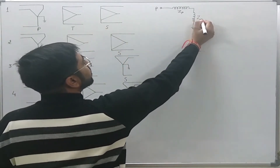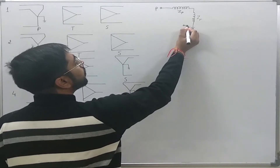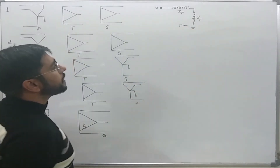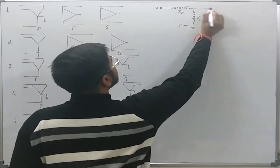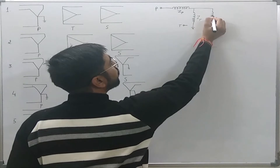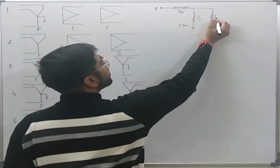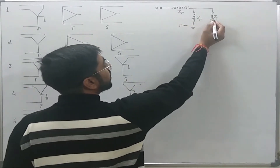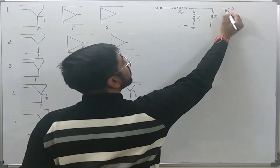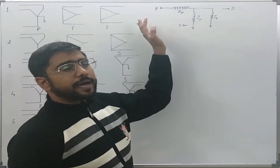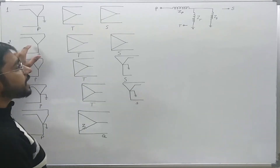The tertiary side will not carry any zero sequence line current on the tertiary line. The secondary delta will offer its impedance Zs to the circulating zero sequence currents; however, these currents cannot appear in the secondary line, so it will be an open circuit on the secondary line. In this way, we can draw the zero sequence network for this kind of connection.